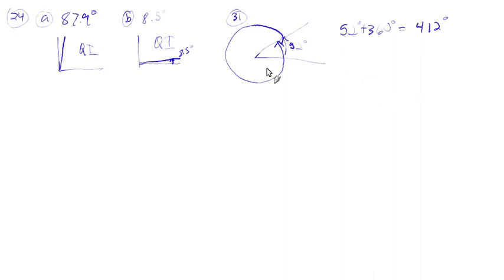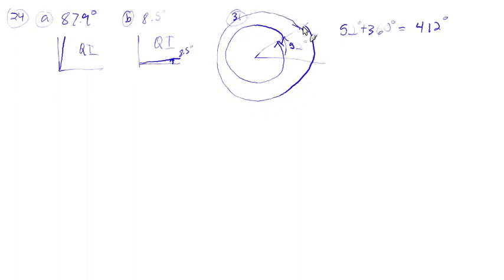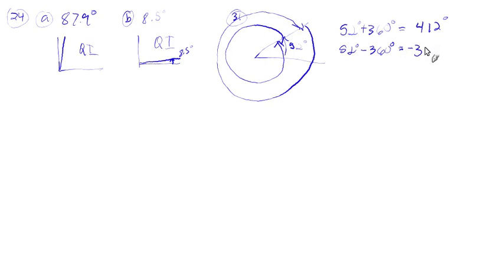Going the other direction — negative — we start at 52° and go down through zero and keep going the full 360° in the negative direction. So 52 minus 360 gives us negative 308 degrees. That's the negative coterminal angle for 52°.